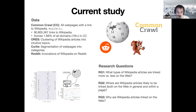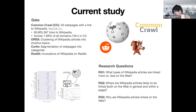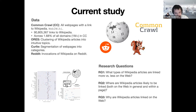In our analysis, we focus on three questions. The first is what types of Wikipedia articles are linked more versus less on the web. The second is where on the web articles are actually being linked, both within the web as a whole and within an individual web page. And finally, we share our initial thoughts on why individuals link to Wikipedia.